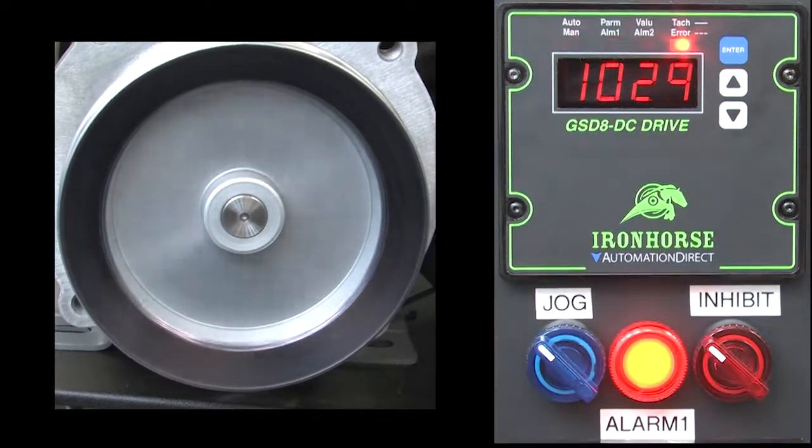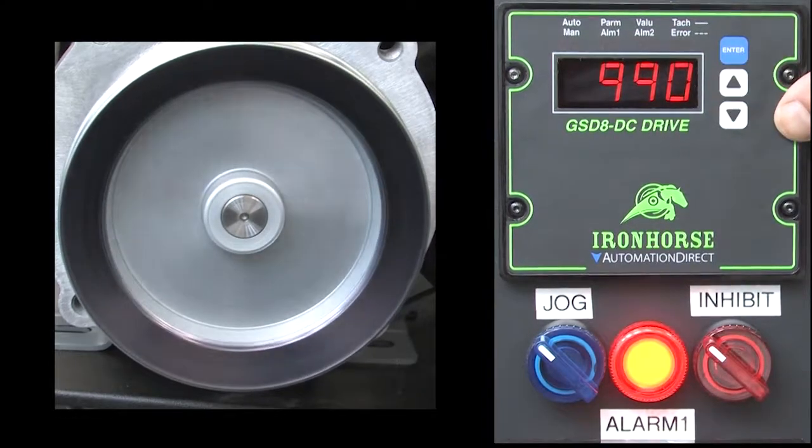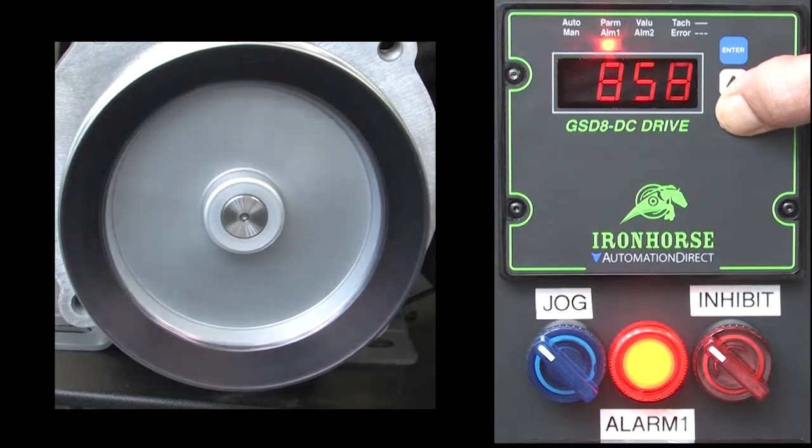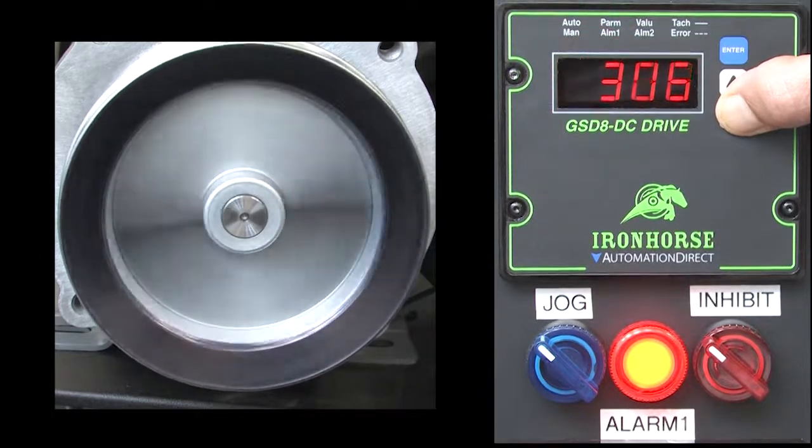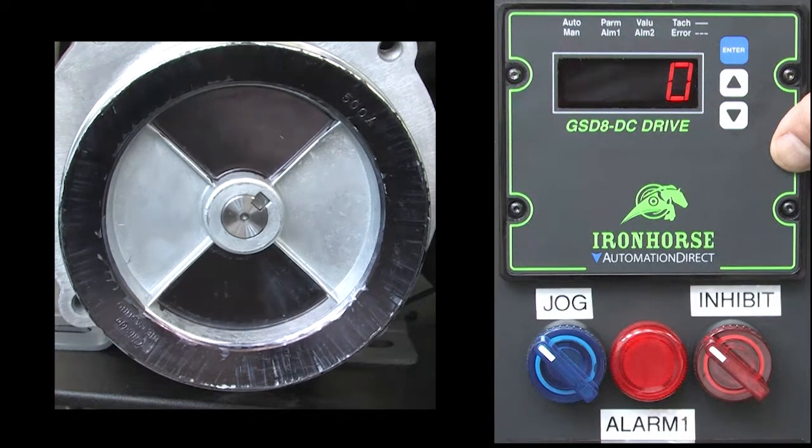Let's turn jog off and drop the target to 990. Yep, the alarm comes back on because we are below the 995 RPM lower limit we set. If we go to 0 RPM, we get no alarm – again because we told it not to in parameters 51 and 52.